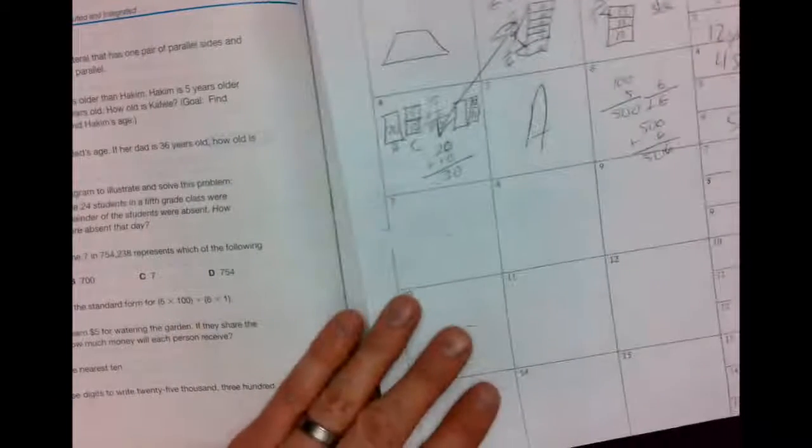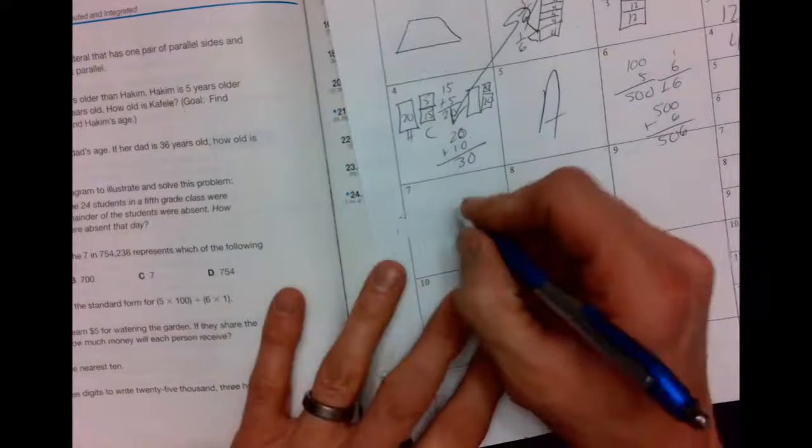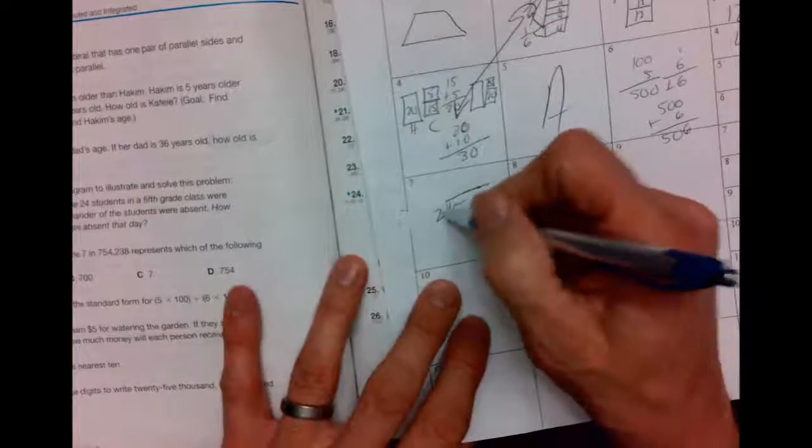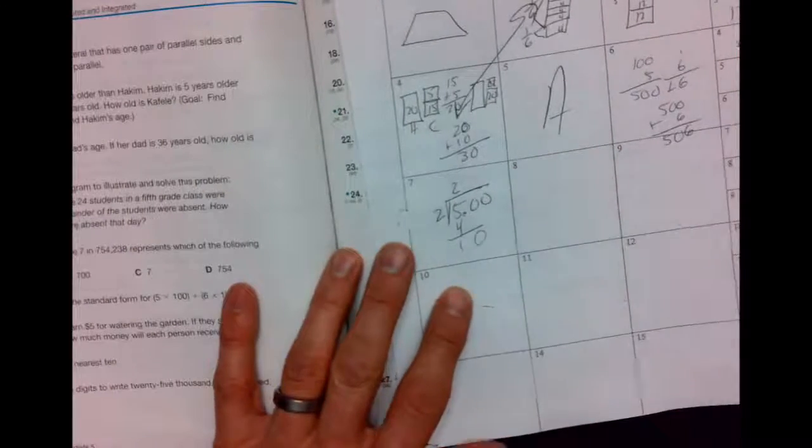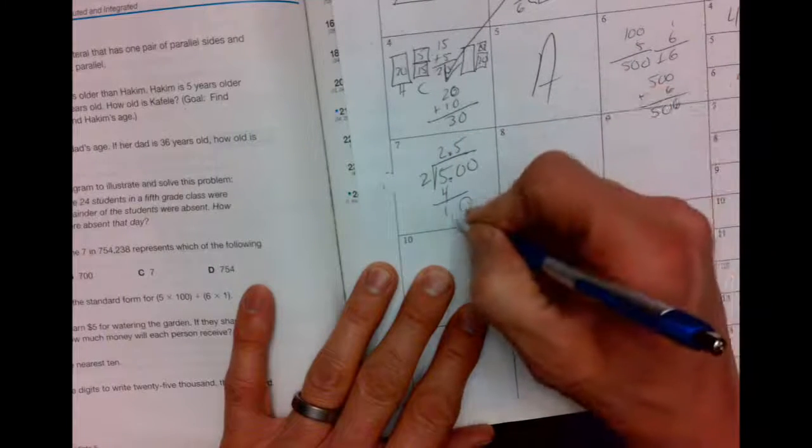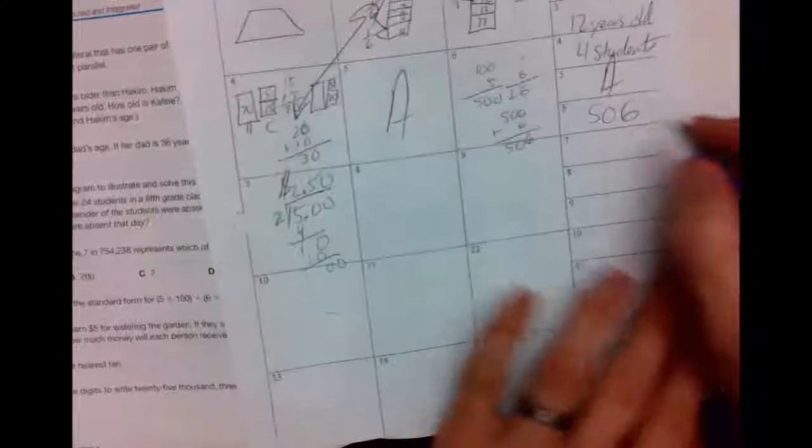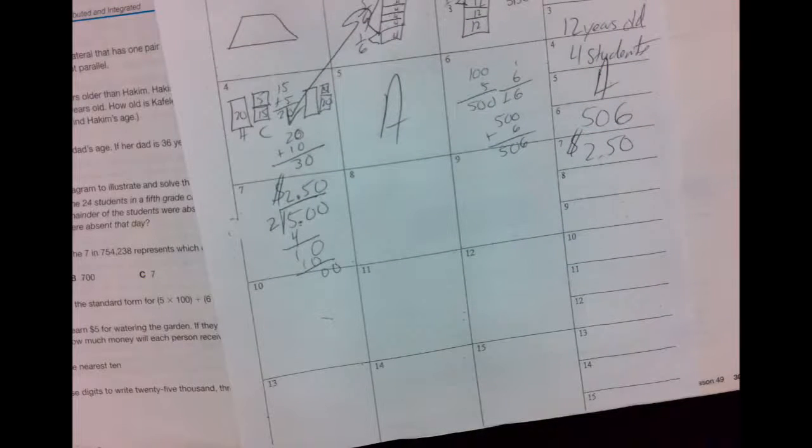Let's do one more. Number seven, Zuri and Kaya will earn five dollars for watering the garden. If they share the money equally, how much money will each person get? All right, so let's take our five dollars and divide it between you and your brother. How many times does two go into five? Twice. Two times two is four. Subtract, you get one. Bring down the zero. Two goes into ten, five times is ten. And two goes into zero, zero times. I get two dollars and fifty cents. You get two dollars and fifty cents. And let's go to the store and get some candy.